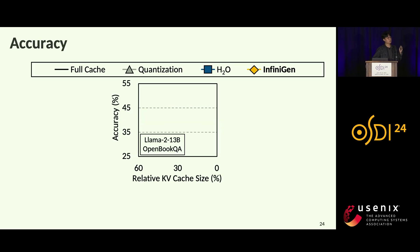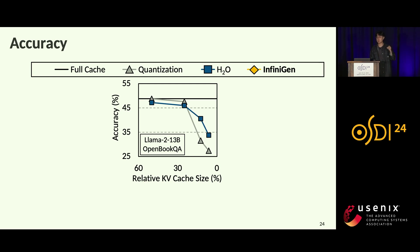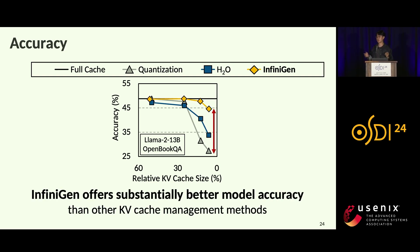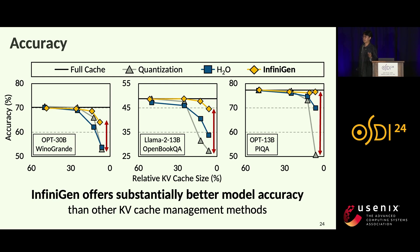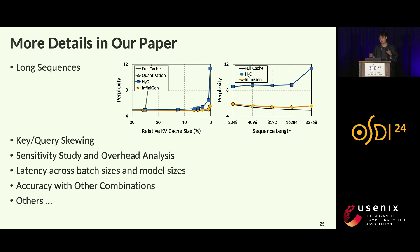InfiniGEN also shows better model accuracy than prior solutions. The x-axis shows the relative KV cache size involved in attention computation, and the y-axis shows accuracy, with the black line representing full KV cache accuracy. While quantization and H2O lead to a large accuracy drop, InfiniGEN offers substantially better accuracy even at small relative KV cache sizes. This holds across different datasets and models, because InfiniGEN maintains the full KV cache pool and selectively loads a few tokens rather than permanently evicting less important ones. More results on scalability and a projection for millions of tokens are in our paper.